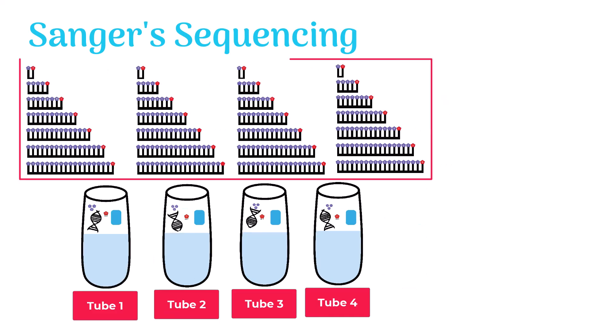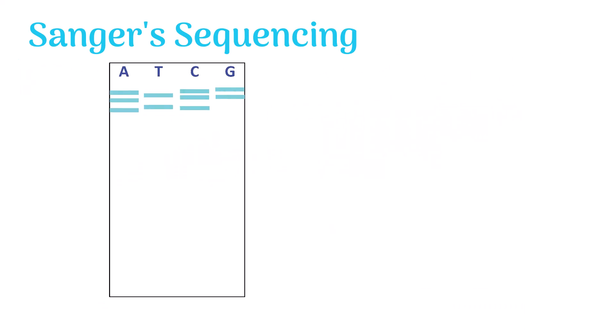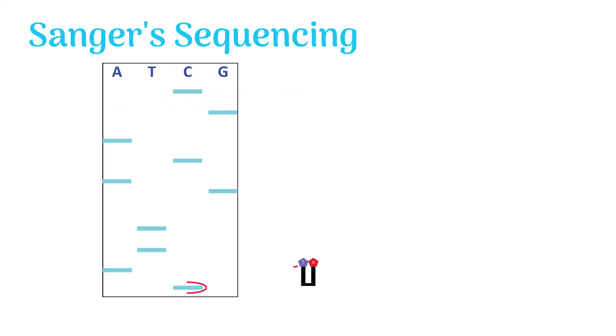We take all the DNA fragments formed in each tube and load them on different wells of the gel. Remember, smaller fragments travel further while larger fragments stay stuck near the starting point.